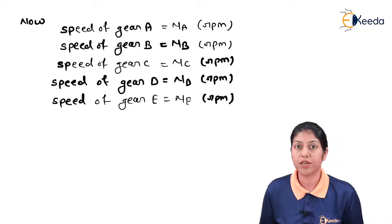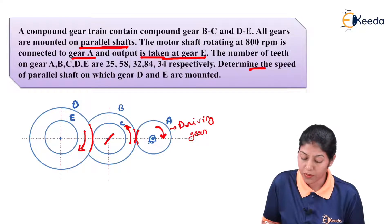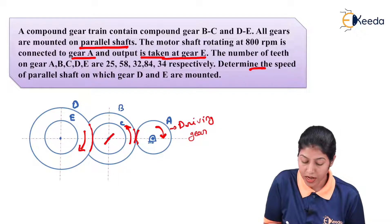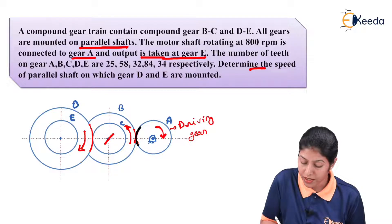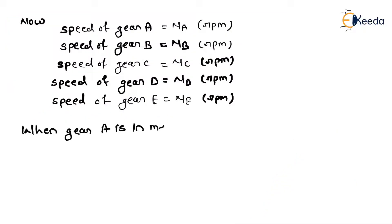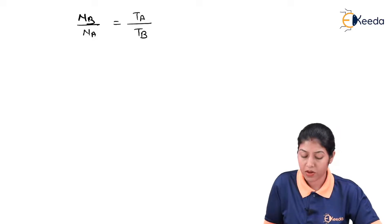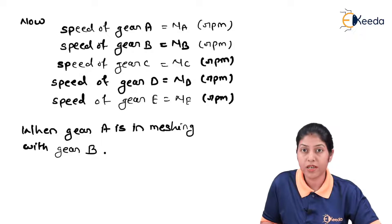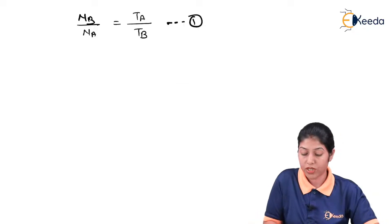To define the speed ratio condition, we only define it based on the meshing condition. As per the diagram, meshing is only possible between A and B, and C and D, because BC and DE are compound gears, so only one gear can be in contact with another. Gear A, the driving gear, is in meshing condition with gear B. The speed ratio for this condition is: NB / NA = TA / TB. This is equation 1.